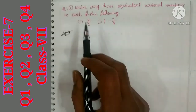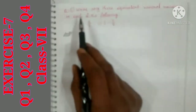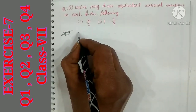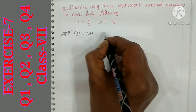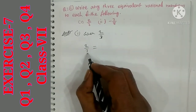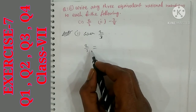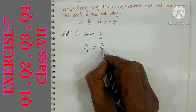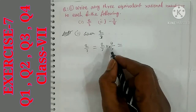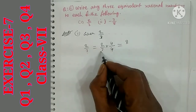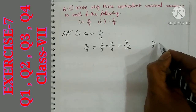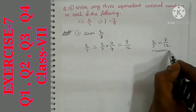Exercise 7, question number 1: write any 3 equivalent rational numbers for each of the following. The first question gives 2 by 3. To find an equivalent, you multiply the numerator and denominator by the same number. Taking 4: 2×4 = 8, 3×4 = 12. So 2 by 3 is equal to 8 by 12.